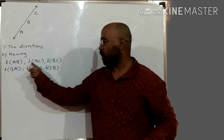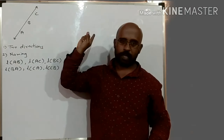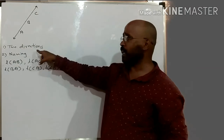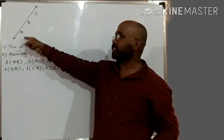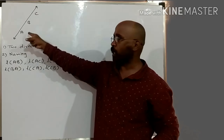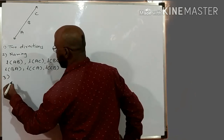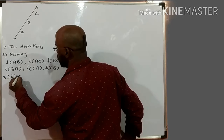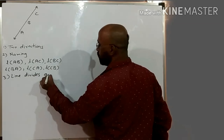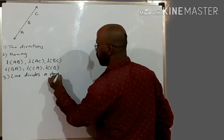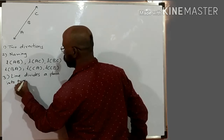So all these six are names of the same line. Clear? So line has two directions — this is the way how to name a line. Line is infinite in both directions. And the most important one for this year is: line divides a plane into two parts.